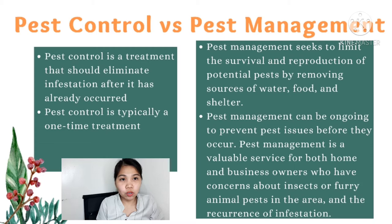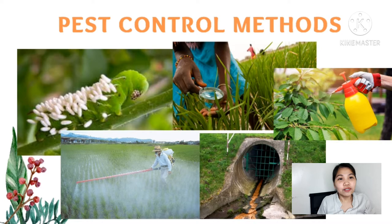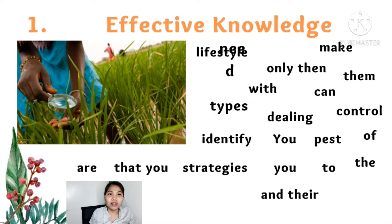There are several methods to control pests. For the next activity, your task is to arrange the jumbled words into a meaningful sentence. The first method is effective knowledge.